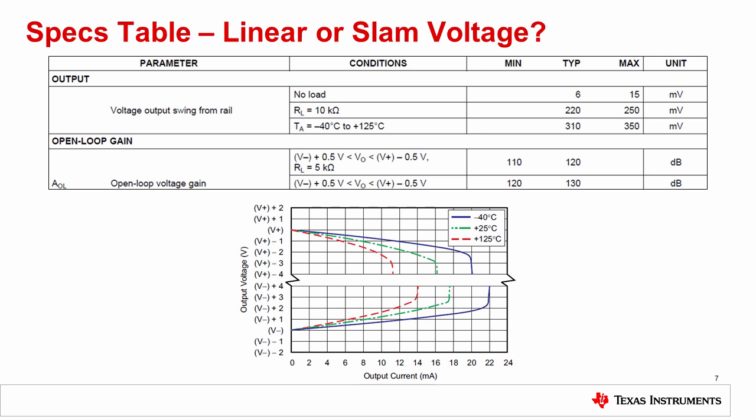In the previous example with the OPA827, we showed that the output voltage range spec in the table was for a linear output, since the test condition defined an AOL greater than 120 dB. In general, when a high value of AOL is given in the test conditions of the output swing specification, you can be confident the specification implies linear operation. Let's consider another device datasheet specs table that does not list a high AOL in the output range test conditions. The AOL specification gives a test condition of 500 millivolts away from the rail, while the output voltage range spec is only 220 to 350 millivolts away from the rail — meaning the output voltage swing limit is a SLAM limit, and the linear output voltage range is actually 500 millivolts from each rail.